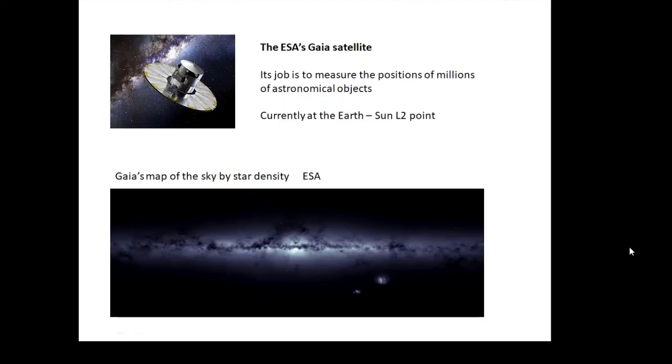The ESA's Gaia satellite—now I mentioned this when I was talking about detecting exoplanets. Its job is to measure the positions of millions and millions of stars. Basically, it's measuring the parallax angle of millions of stars and it's helping to produce a map of the Milky Way. So we know millions of stars in the Milky Way.